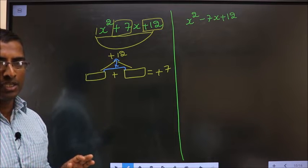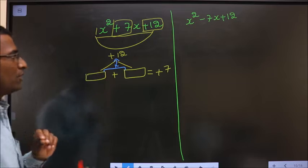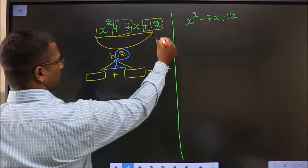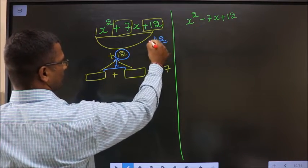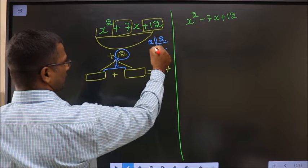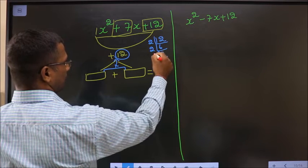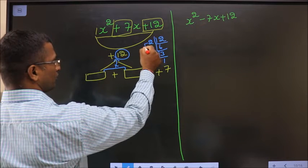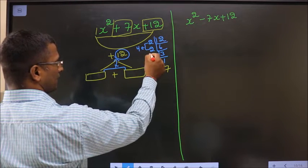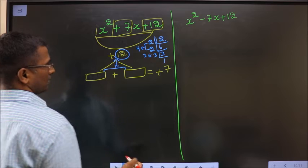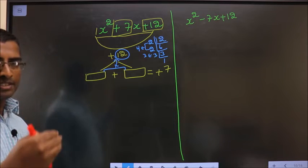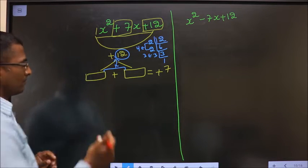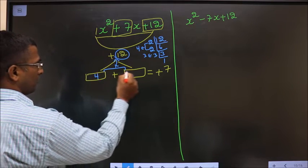How do I find those two numbers? By taking the LCM of 12. So take LCM: 2, 6; 2, 3 and 3; 1. So the two numbers will be 2 into 2, which is 4, and 3. Four plus 3 is 7, and 4 into 3 is 12. So the two numbers are 4 and 3.